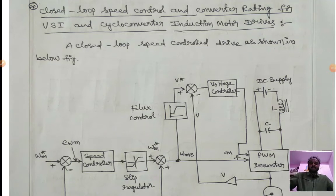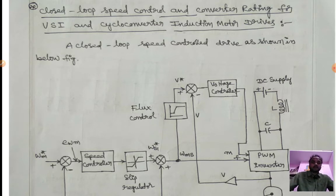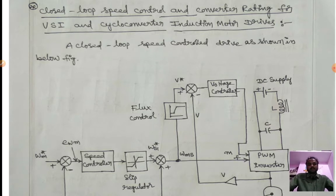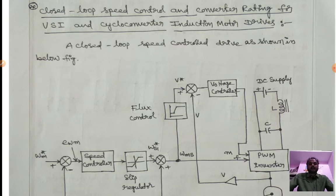In this video we will see about closed loop speed control and converter rating for voltage source inverter and cycloconverter induction motor drives. In closed loop operation, the output varies with respect to input — the input always depends on the output. Closed loop operations are more popular than open loop operations.